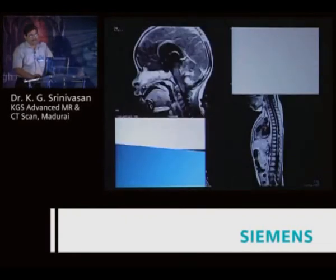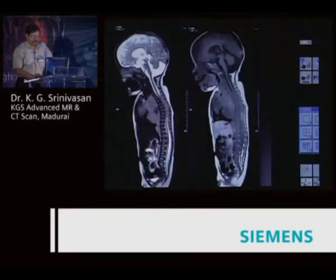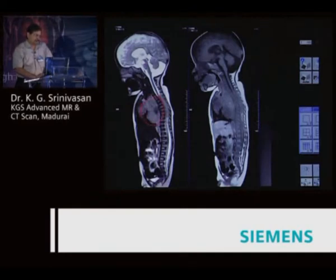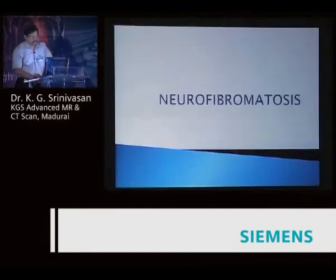This is a medulloblastoma PNET with drop metastasis in the spinal cord. This young baby presented with paraparesis for evaluation. You can see the neuroblastoma extending into the spinal canal and compressive myelopathy — a complete diagnosis we can give.